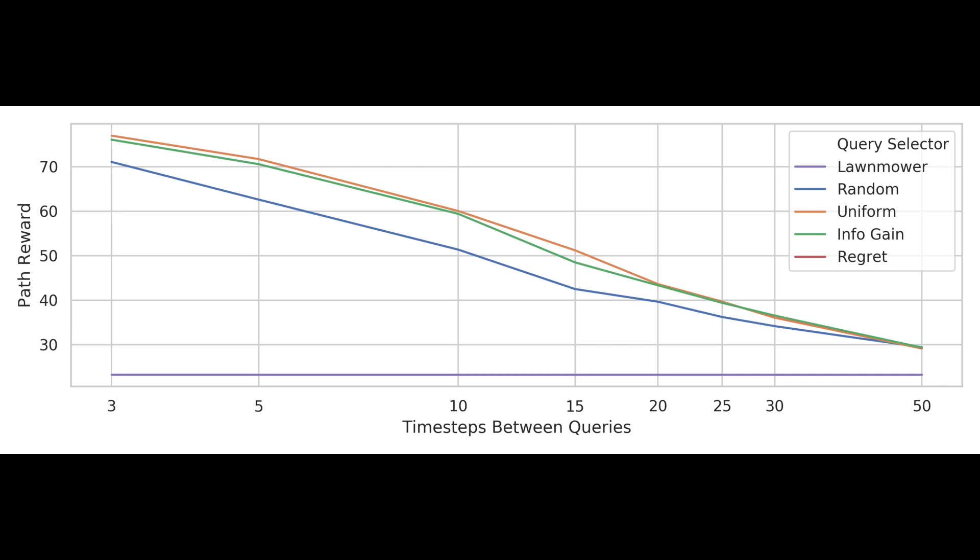Perhaps surprisingly, the information gain approach doesn't perform any better than uniform selection at collecting reward. It's apparent that knowing whether their most recent observation is interesting can be at least as important to finding a good path as knowing the scientist's true reward model.